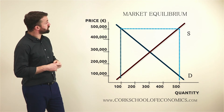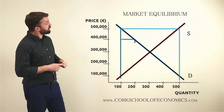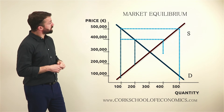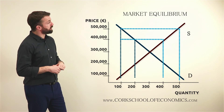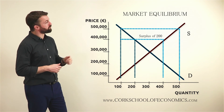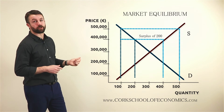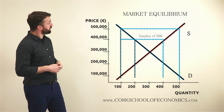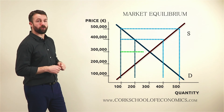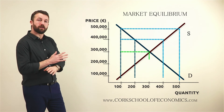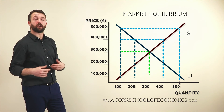There are 400 houses left over, so the price has to come down. It comes down to €400,000, and continuing down to €300,000, the market will clear as we are in equilibrium and quantity supplied and demanded are now equal.